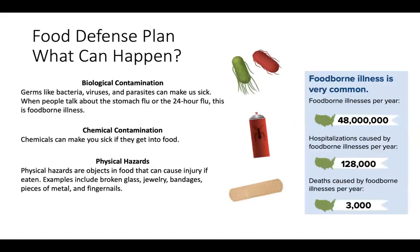What Can Happen? Biological Contamination. Germs like bacteria, viruses, and parasites can make us sick. When people talk about the stomach flu or the 24-hour flu, this is often foodborne illness. Common symptoms are vomiting, diarrhea, stomach cramps, and fever. Symptoms can start a couple of hours to several weeks after eating.